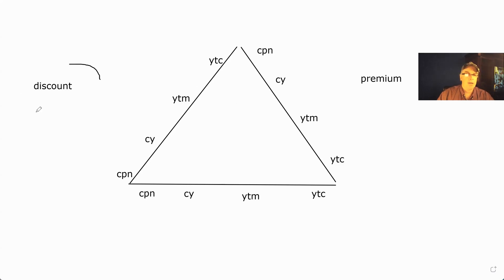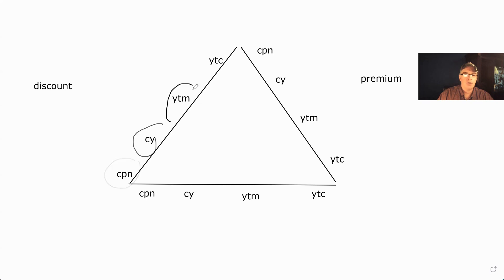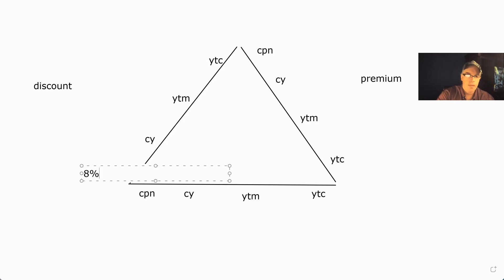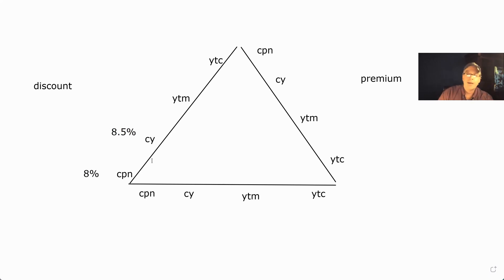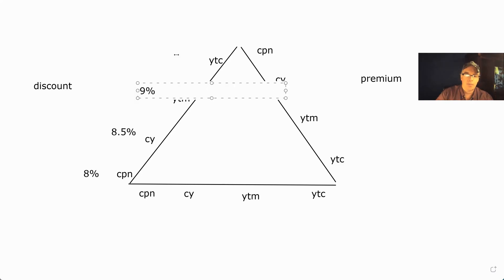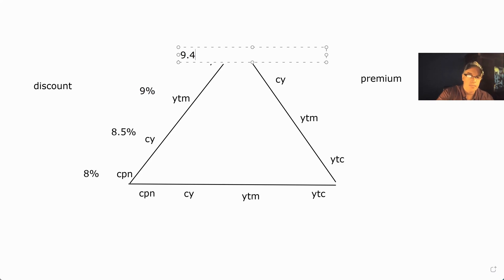So on a discount bond, the coupon is the lowest, then current, then yield to maturity, then yield to call — that's low to high. So if the coupon is, say, 8% and they tell you the current yield is 8.5, we know it has to be a discount if the current is higher than the coupon. Or you can just say: if the coupon is the lowest of any of the yields, then it has to be a discount.